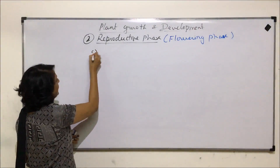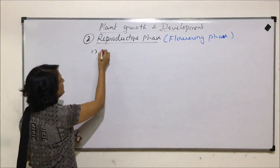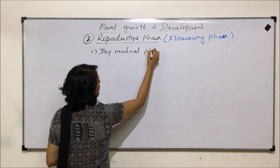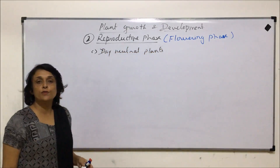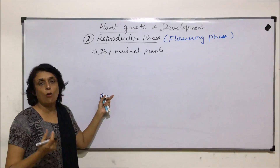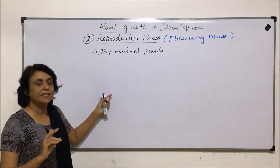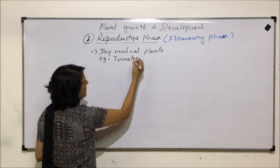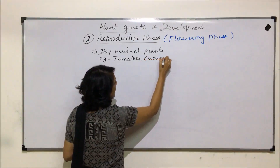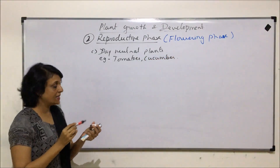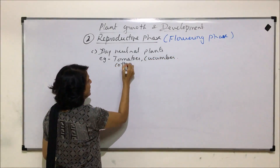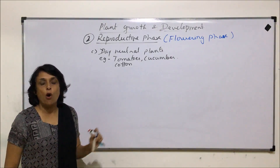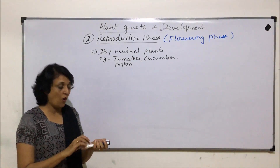The third category are day neutral plants. For them to produce flowers, the duration of the day or night period or dark period doesn't make any difference. Examples of day neutral plants are tomatoes, cucumber, and cotton. These plants produce flowers irrespective of the duration of the daytime or light period.